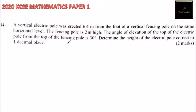This is question number 14. We are told a vertical electric pole was erected 6.4 meters from the foot of a vertical fencing pole on the same horizontal level. The fencing pole is 2 meters high.